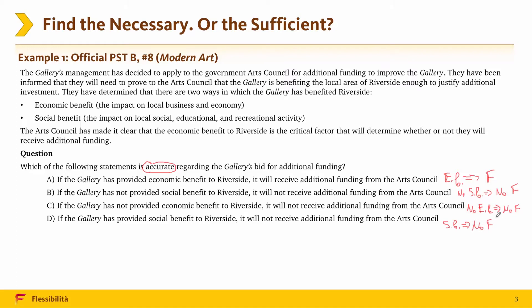We look at the text and learn what is important for getting that funding. From the text we learn that the gallery's management, in order to get funding, will need to prove to the Arts Council that the gallery is benefiting the local area of Riverside, and it needs to benefit in two ways: economic and social. We also learn that economic benefit to Riverside is the critical factor that will determine whether or not they will receive additional funding.